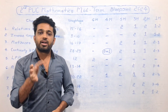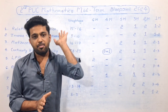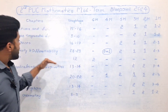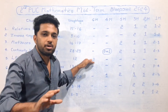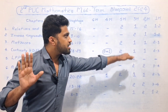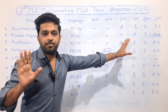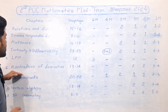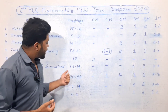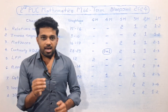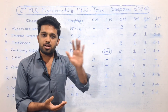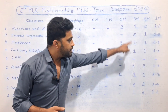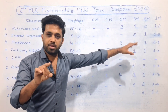Question number 46 with 6 marks is confirmed 100% from LPP. Next is Applications of Derivatives, which has an allotment of 13 to 14 marks. In this chapter, you will be asked 5-mark, 3-mark, 2-mark, and 1-mark questions in the final exam.